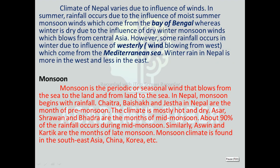The climate of Nepal varies due to the influence of wind. In summer, rainfall occurs due to the influence of moist summer monsoon winds which come from the Bay of Bengal. Whereas winter is dry due to the influence of dry winter monsoon winds which blow from Central Asia. However, some rainfall occurs in winter due to the influence of westerly winds blowing from the west, coming from the Mediterranean Sea. Winter rain in Nepal is more in the west and less in the east.